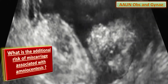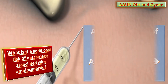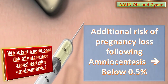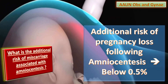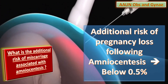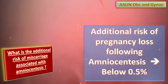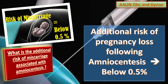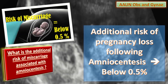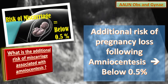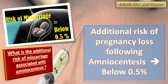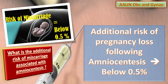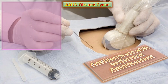The guideline says that women should be informed that the additional risk of pregnancy loss following amniocentesis performed by an appropriately trained operator is likely to be below 0.5%. So in both amniocentesis and CVS, the risk of miscarriage is below 0.5%.